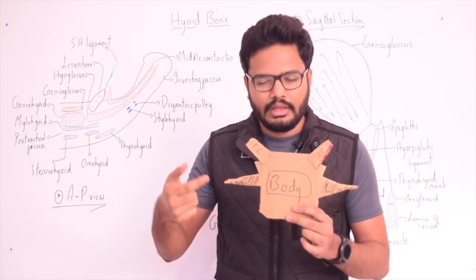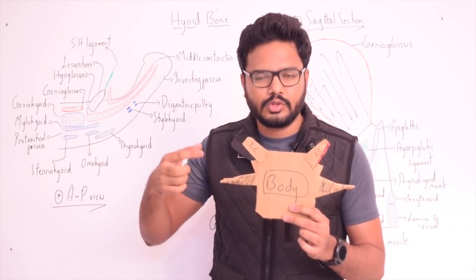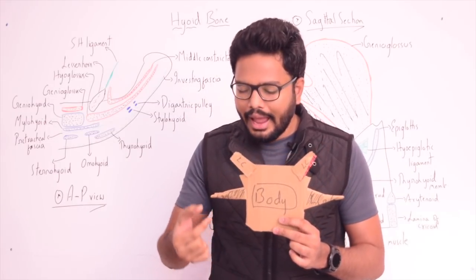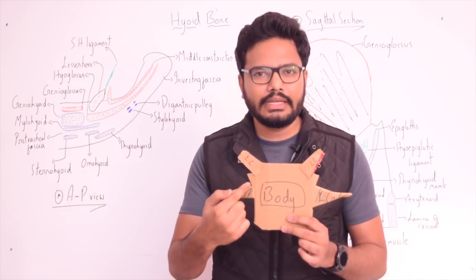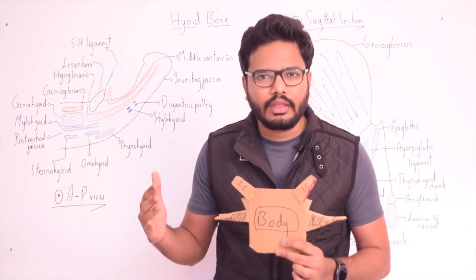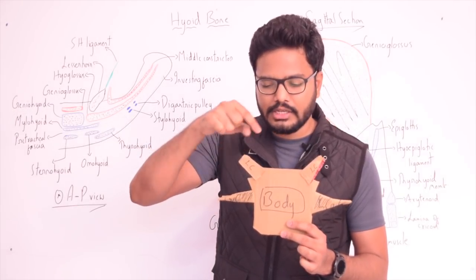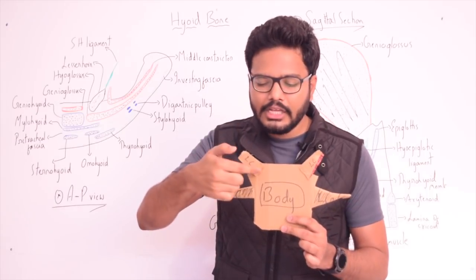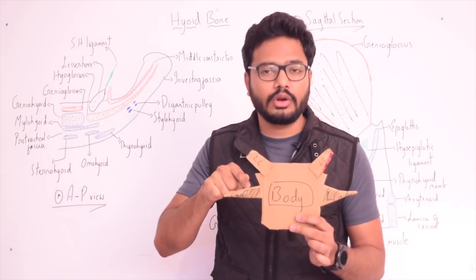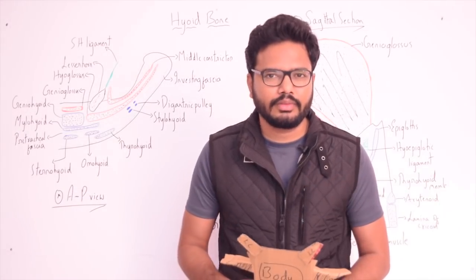As the body extends posteriorly, it narrows and tapers, ending in a tubercle — this forms part of the greater cornua. The attachment between the greater cornua and the body is fibrous in nature until middle age, after which ossification can occur. The lesser cornua is attached at the junction of the body and greater cornua, also fibrous. The lesser cornua, which is conical in shape, can be attached to the greater cornua through synovial joints, and ankylosis may occur in some cases.